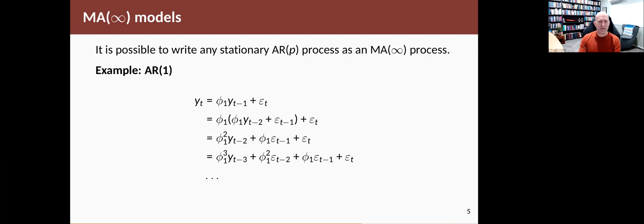Now, it's possible to write any stationary AR(p) model as an MA(infinity) model. So here's an example with an AR(1). Here the AR(1) can be written like this: yt equals φ1 times yt-1 plus an error, a random error.